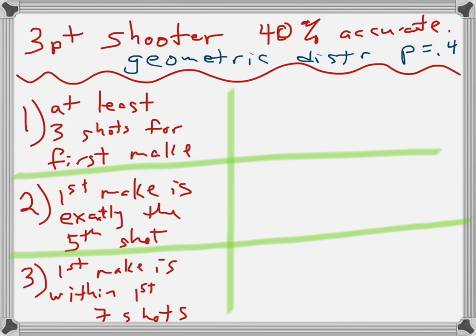All right, so if the probability of success is 0.4, we need to write a probability statement for number one. This is the probability that, well, so at least three is X greater than or equal to three. We need to write that as a less than or equal to. So, that's one minus for the complement. The probability that X is less than or equal to two. Because you're either greater than or equal to three, or you make two or less. Those are complements of each other. That's why it's one minus.